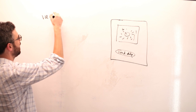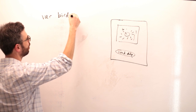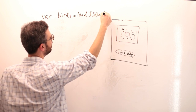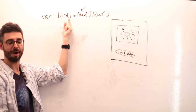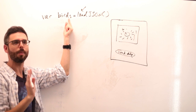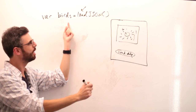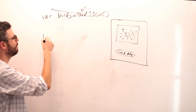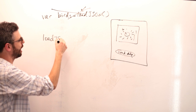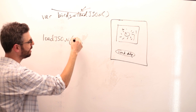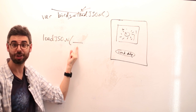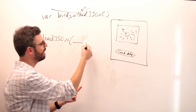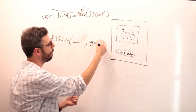Previously in preload we said var birds equals loadJSON. This is the synchronous way — preload loads the data and the program waits to start. The asynchronous way is to just call the loadJSON function, pass it the path of the data you want to load — birds.json or some URL — and then what's known as a callback function.